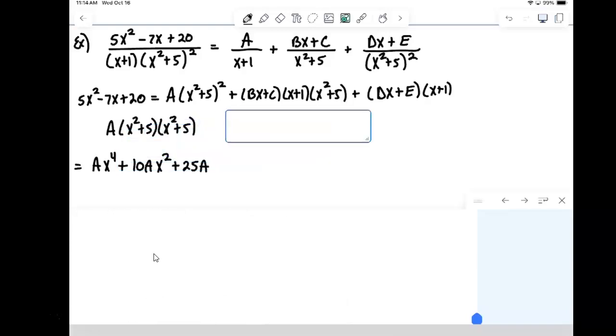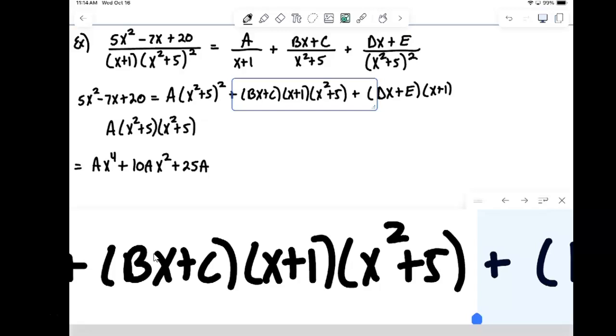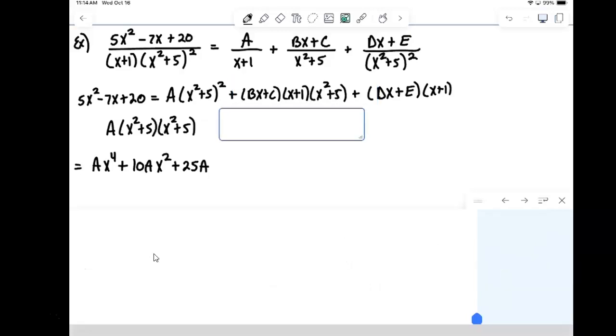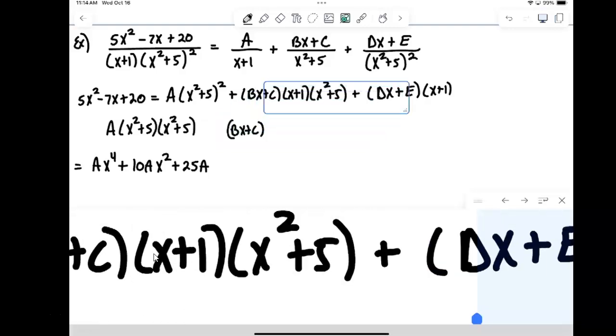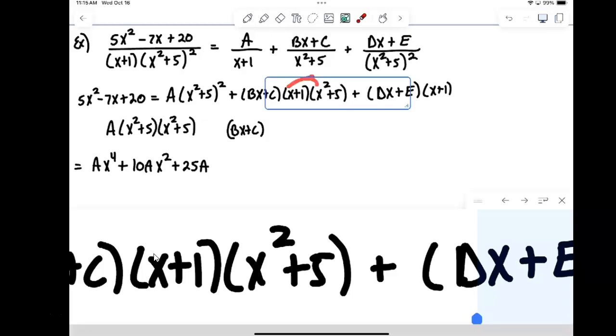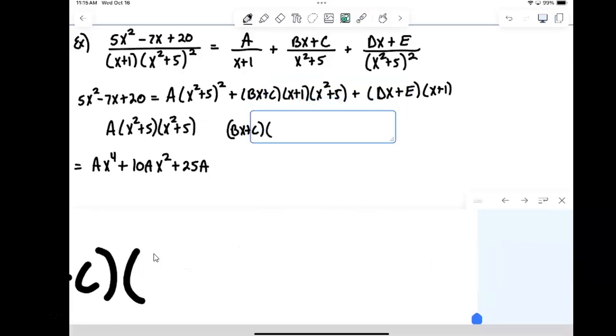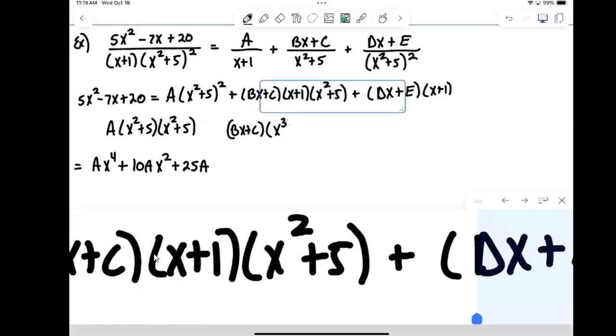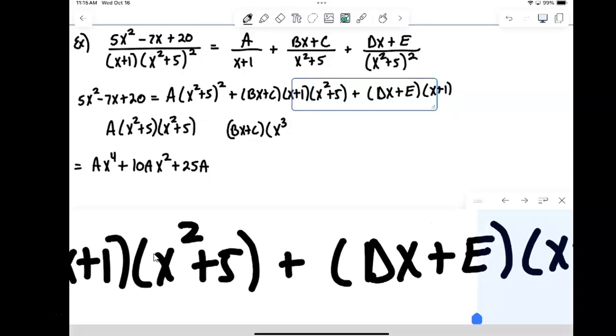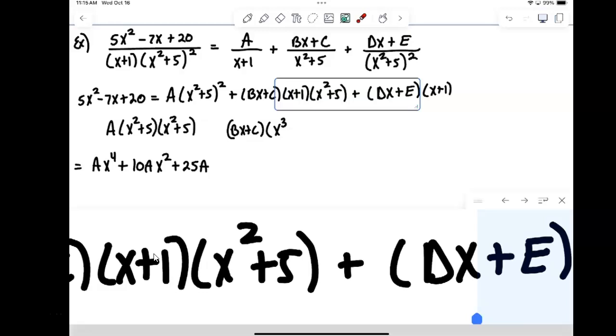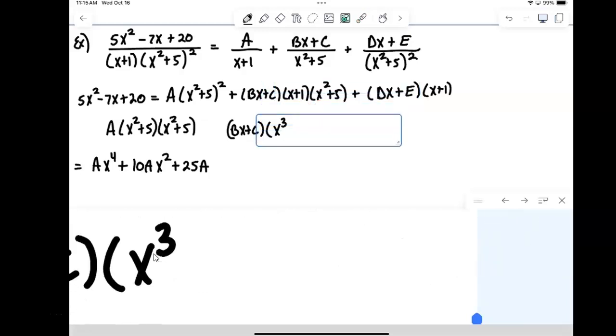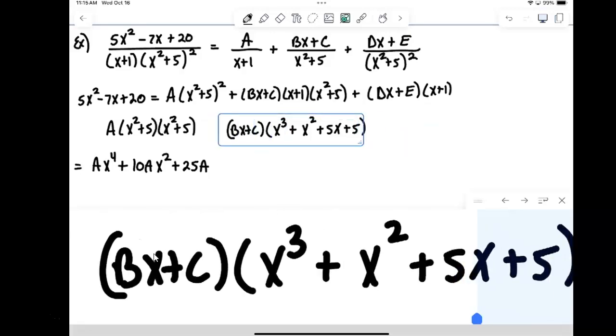So that's taking care of the a part of it. And then here I have three things being multiplied out. So we're going to have to multiply two of them and then multiply the answer times a third. So I'm going to do this by taking, leaving my bx plus c alone for the moment, and then multiply this stuff out. Distributing through, so x times x squared will make that x cubed, x times 5 will give me a 5x. And then in the middle, I'll have 1 times x squared will be 1x squared. And then 5 times x would be 5x. And then 1 times 5 would be 5.